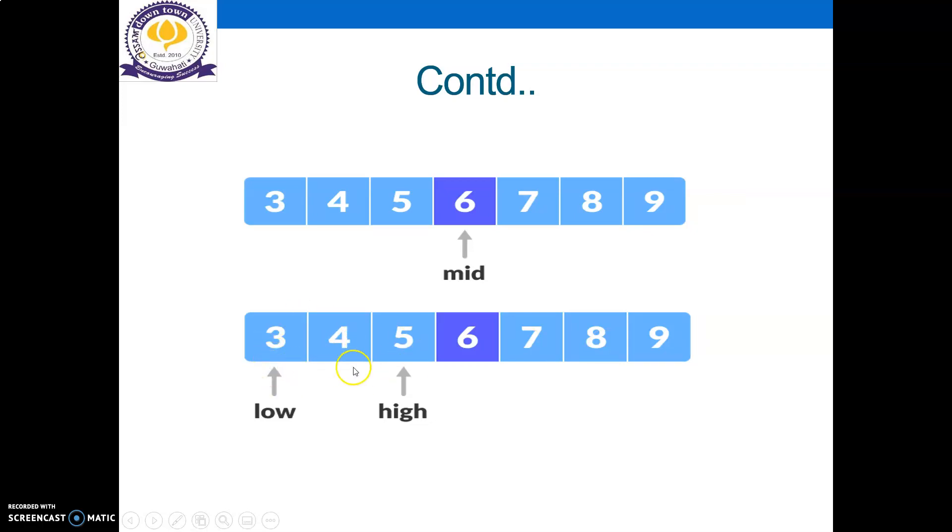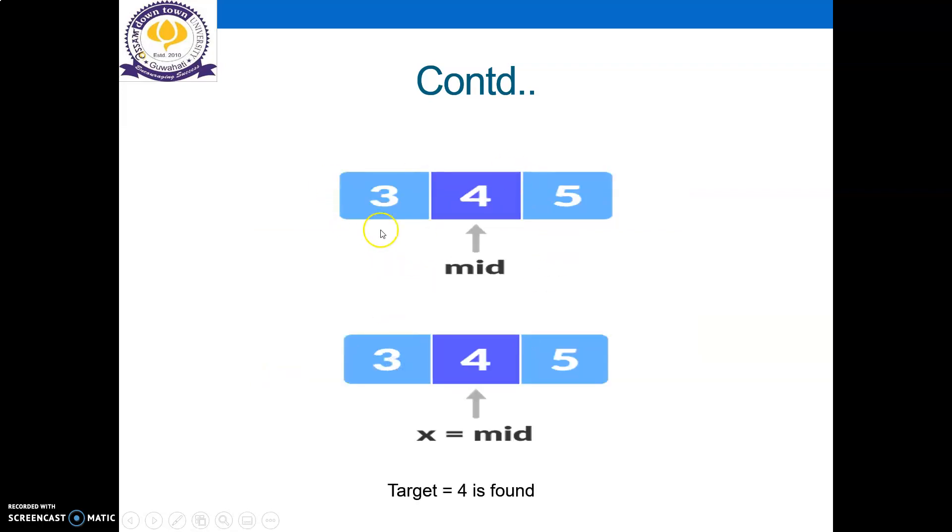So in this array again we have to consider lower and higher key. So for this subarray, again we will choose the middle element. Now the middle element here is four, and our target is also four. Hence we found our target value.